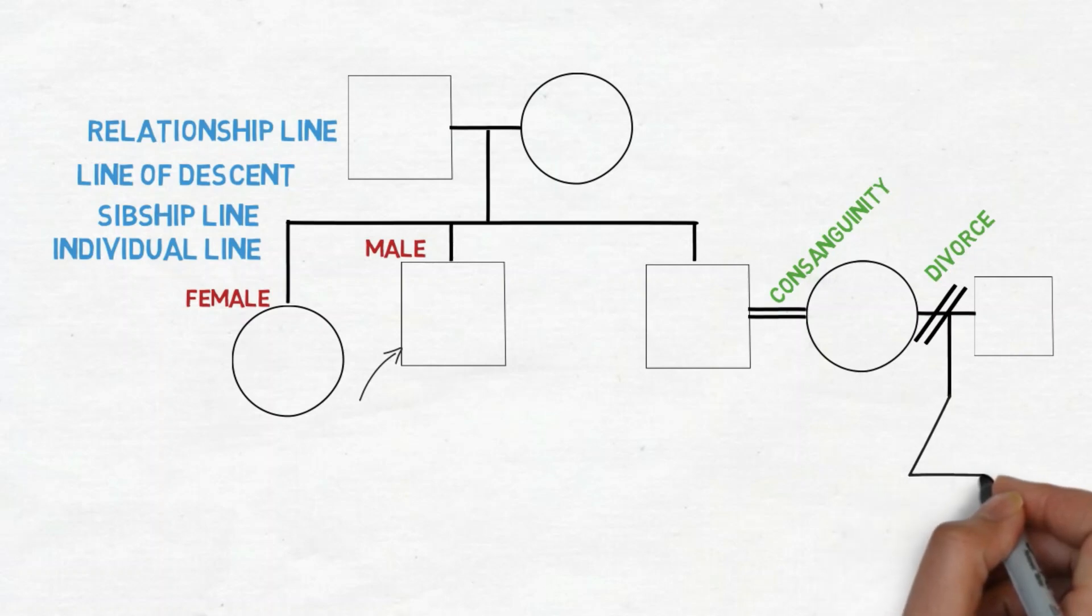The triangle here represents a miscarriage. So that means this lady has had a miscarriage in the past. And if you don't know the gender it doesn't matter but if you do you can write underneath. So in this case it was a baby boy.